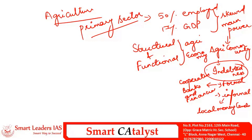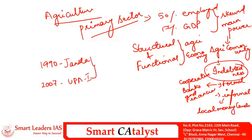Before getting into that, we have to know the history of farm loan waivers in India. The first ever farm loan waiver was done in the year 1990 under the Janata government. The second instance was in the year 2007 under UPA-1. These two initiatives were focused on the prevailing agri distress in India. Now the situations are different — the contribution of agriculture to Indian GDP has fallen to 17%.